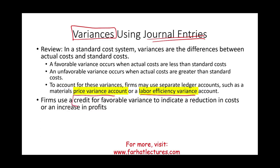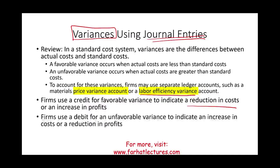Companies use a credit for favorable variances to indicate a reduction in cost or an increase in profit. Think of it as a contra expense when you have a favorable variance — it means you did not spend as much as expected. Unfavorable variances, from a journal entry perspective, think of them as expenses.